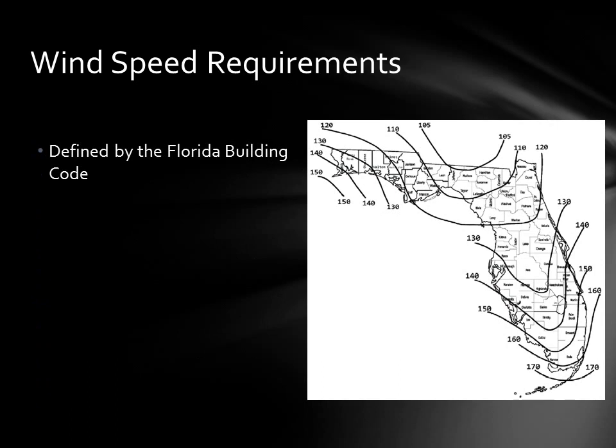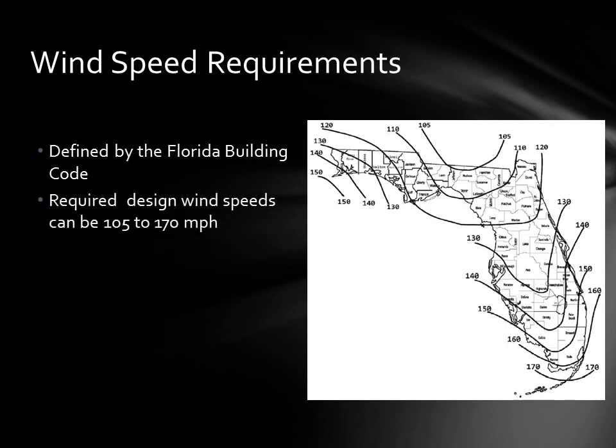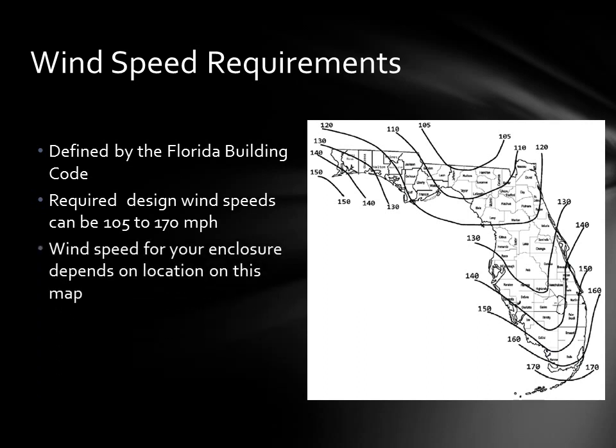The wind speed requirements come from the Florida Building Code. The required design speed can be anywhere from 105 to 170 miles per hour, depending on where the enclosure is going to be built in Florida.